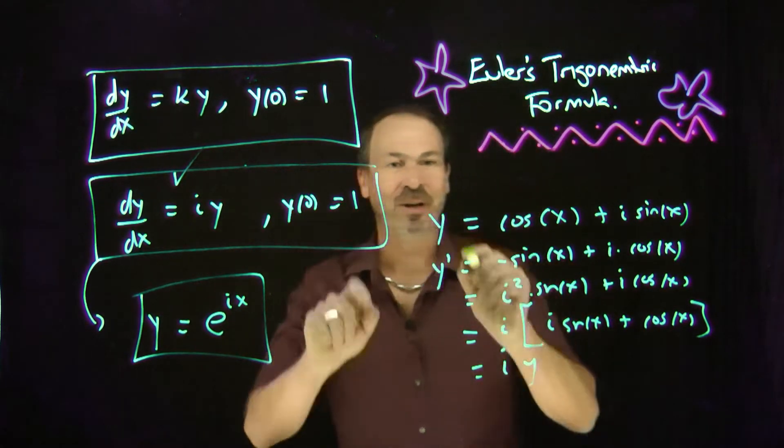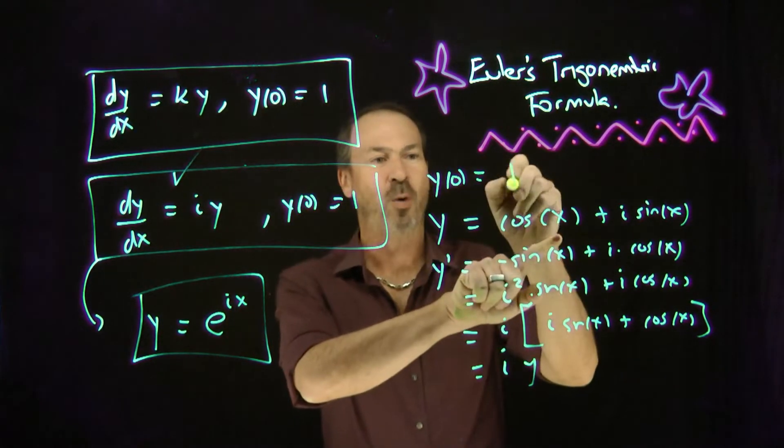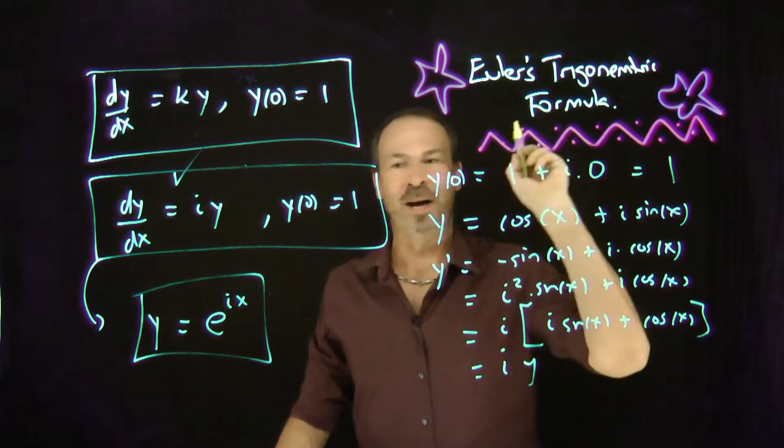Moreover, it satisfies the initial condition. When x is 0, y would be cosine of 0, which is 1, plus i times sine of 0, which is 0. 1 plus i times 0 is 1. Bingo.